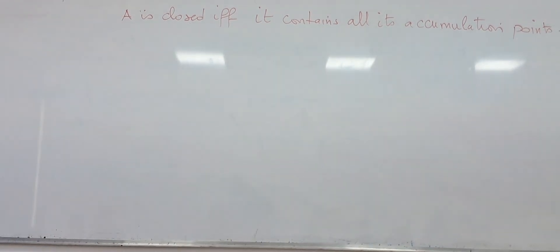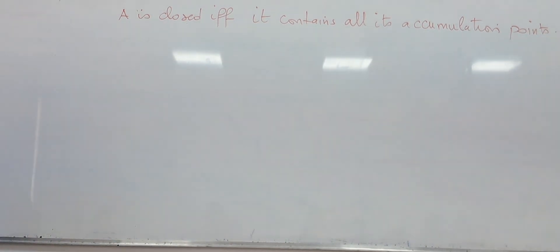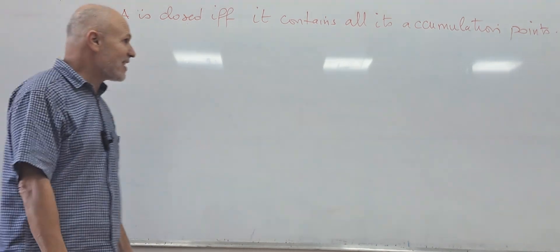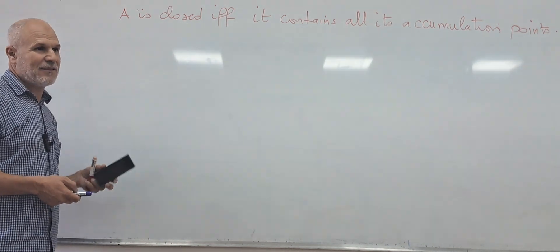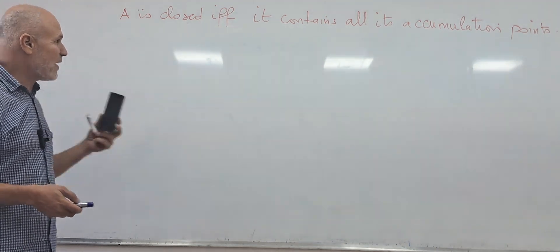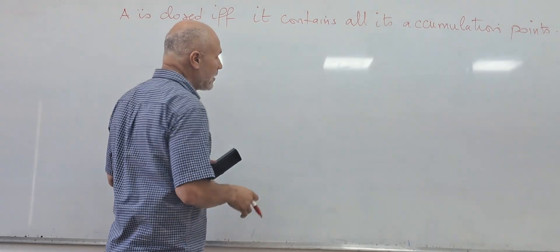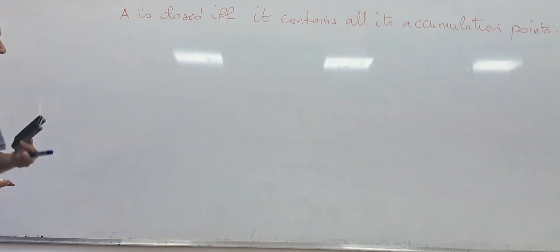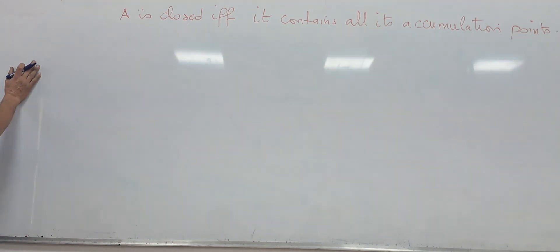Bismillah ar-Rahman ar-Rahim. Once again, we are here at National High School of Mathematics, section I, tutorial session for I6, and this is another exercise. This exercise says: if I is a closed set, show that A is a closed set if and only if this set contains all its accumulation points. Let us start trying to solve this equivalence.